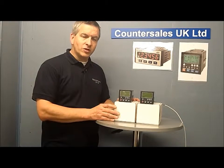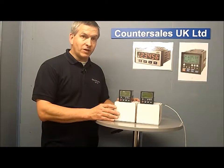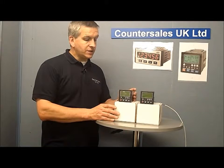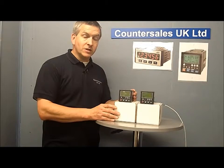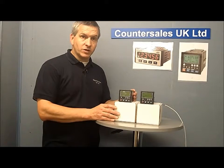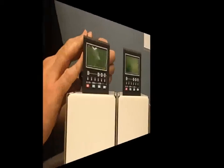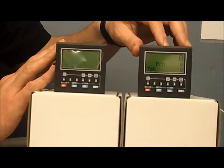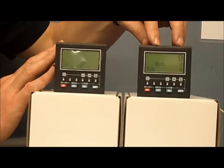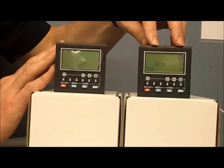This is the TrueMeter 9100 multifunction counter and rate meter. It's a 72 x 72mm sized unit and we're going to look at it a little closer up. The 9100 has a three-line display which we can see on this unit here.